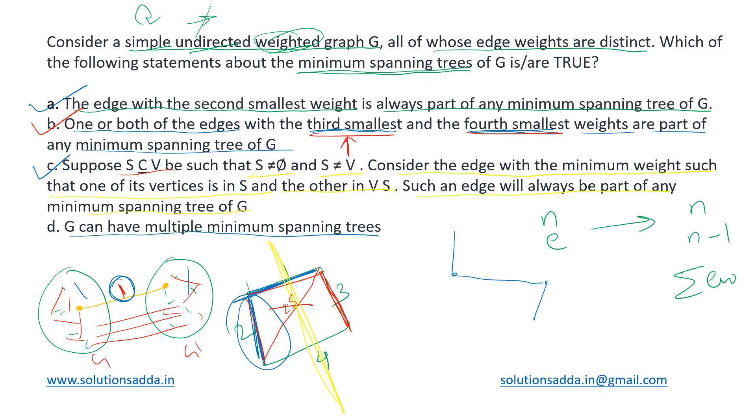Now the last one is saying that G can have multiple MSTs. Now it is mentioned that all the edge weights are distinct in the given graph G. So in such cases when the edge weights are distinct, there is only a unique minimum spanning tree possible. So this statement is incorrect. It cannot have multiple spanning trees. So the correct answer is that A, B, and C are true.